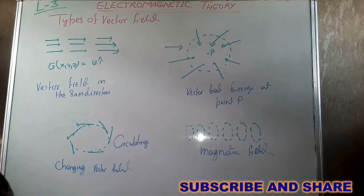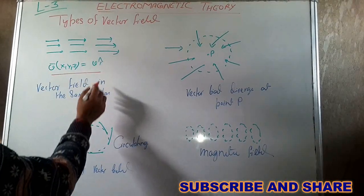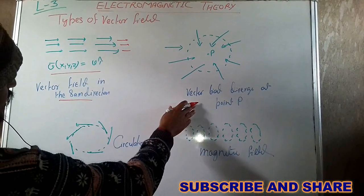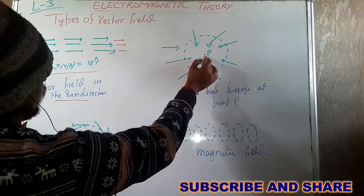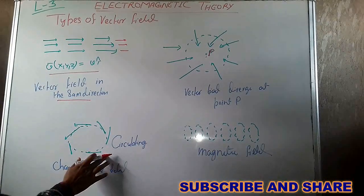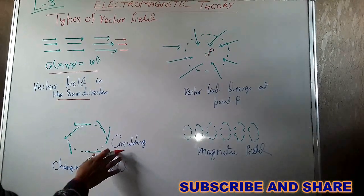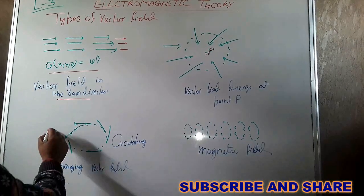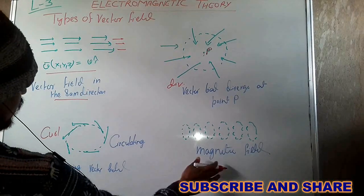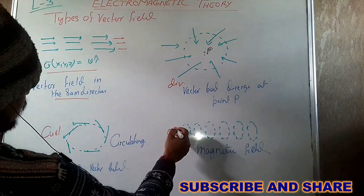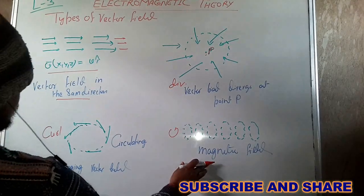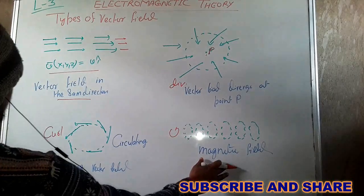We have many types of vector field. One type has the same direction throughout. Another type is diverging or converging at one point P. There is also a circulating vector field, where the direction is changing. The magnetic field is also an example of a circulating vector field, where each point has a different direction.